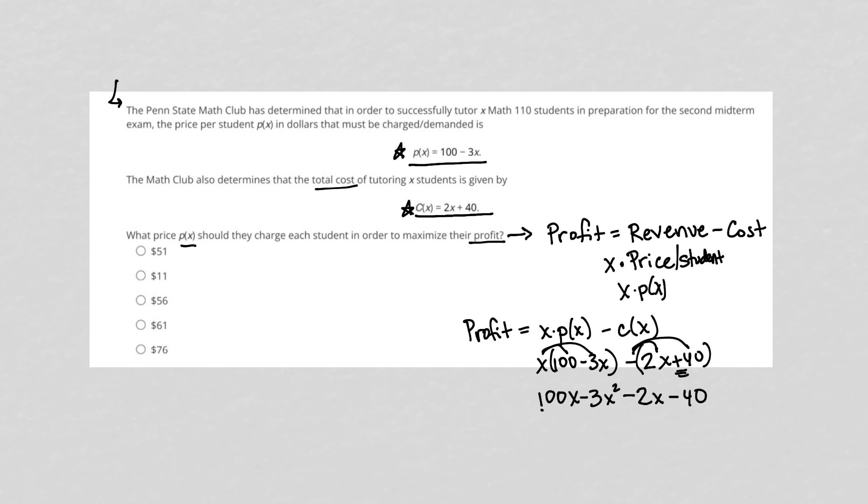Combining like terms, I have 100X minus 2X, well that's just 98X. And what else? I'm just rearranging things a little bit and putting my X squared term in front. I'd have a negative 3X squared in front plus 98X and then minus 40. That's my profit.